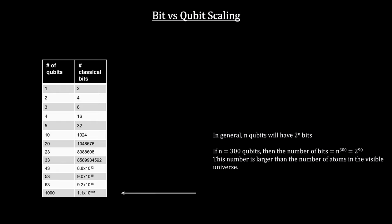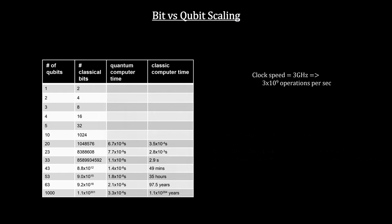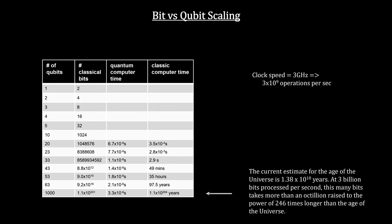This exceptional scaling for the qubits has a significant impact on the time computer operations will take. For example, let's assume we have a computer with a clock speed of three gigahertz. It could perform three billion operations per second. Let's also assume one operation on one bit or qubit can be done in one clock cycle. This huge scaling potential is what's motivating the development of quantum computers.